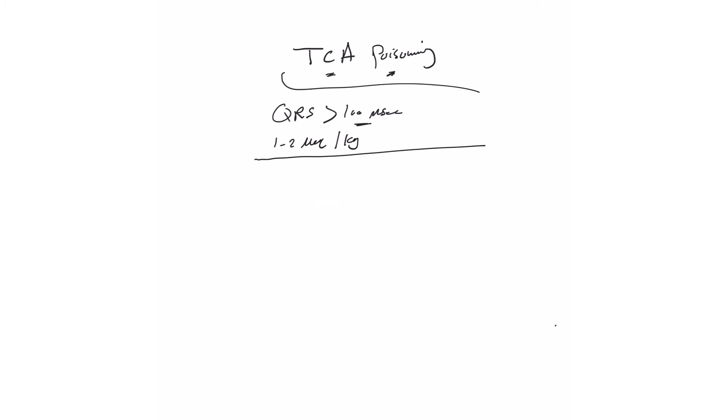Don't give more than two amps and then start bicarb drip. You start the drip after pushing these two amps, whether we corrected the QRS or not, and whether the QRS was normal to start with.